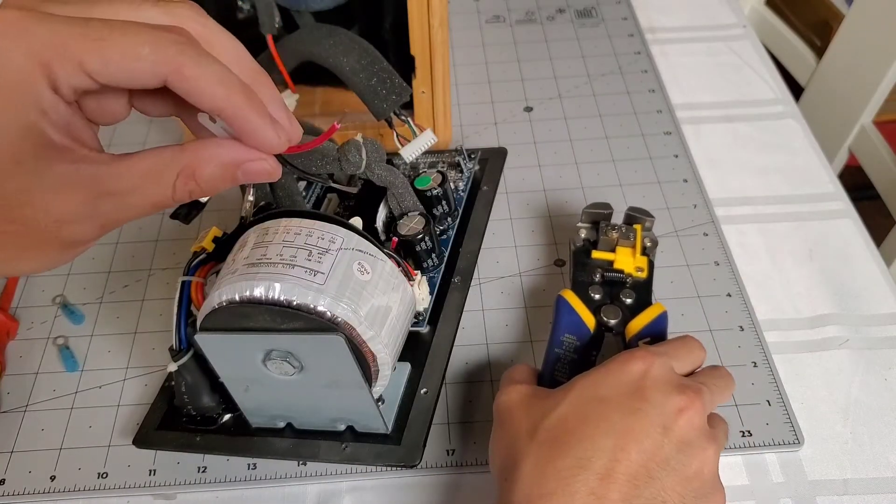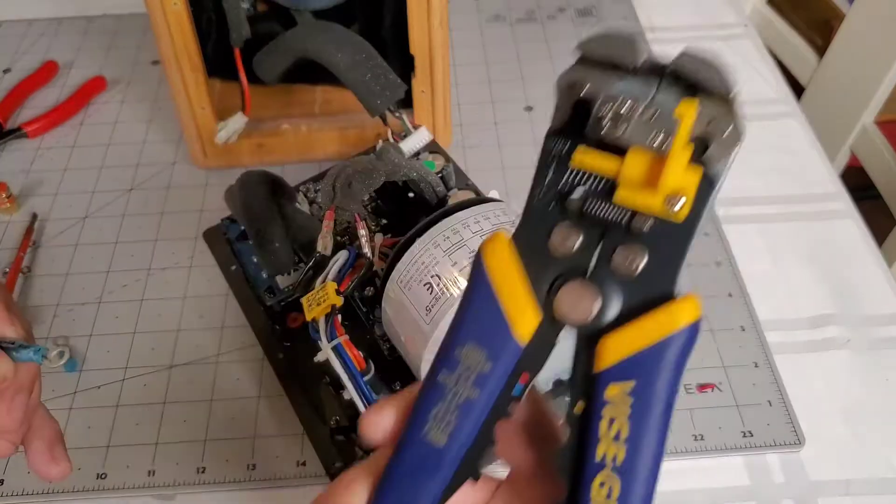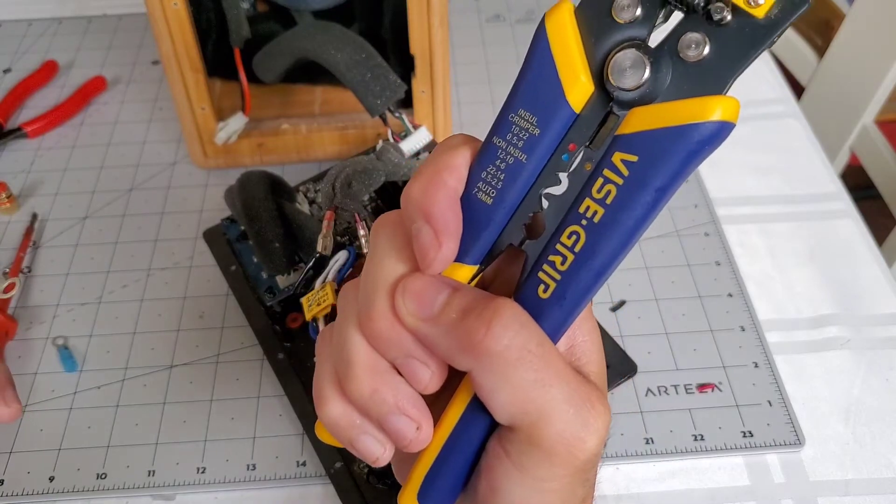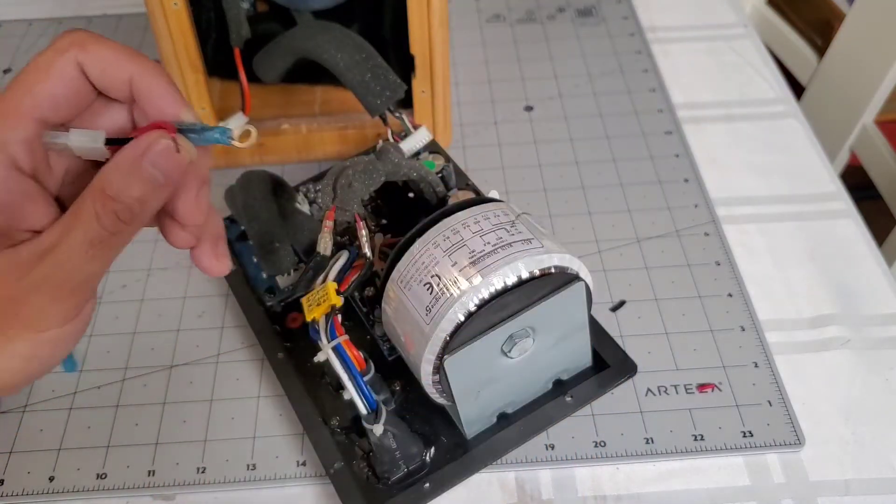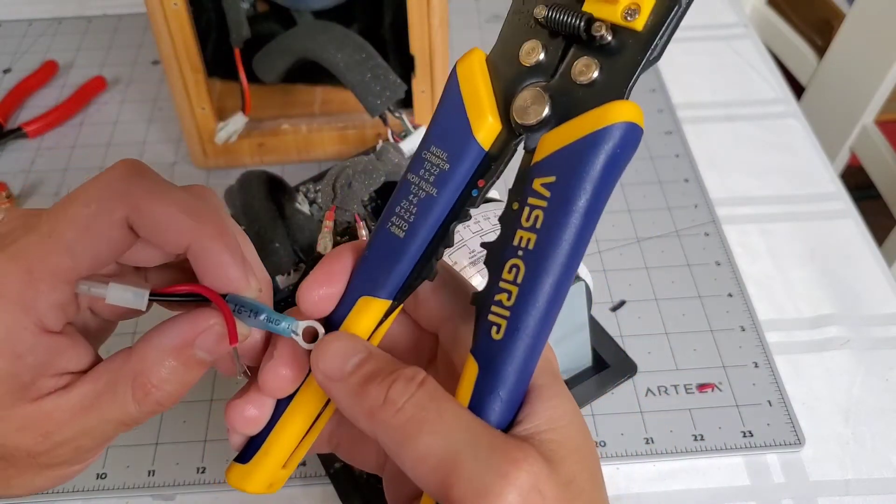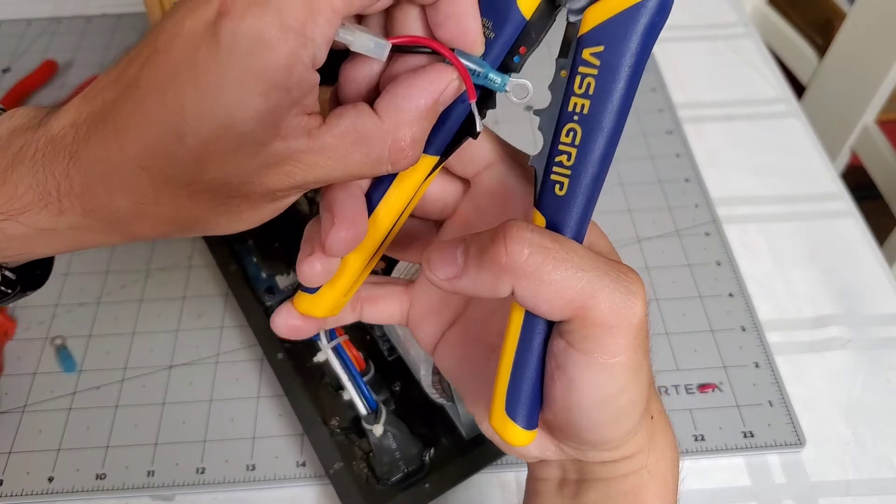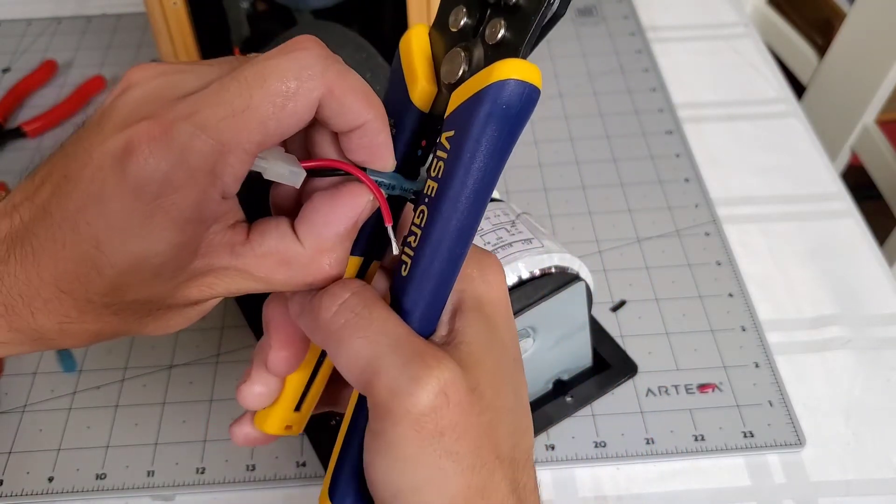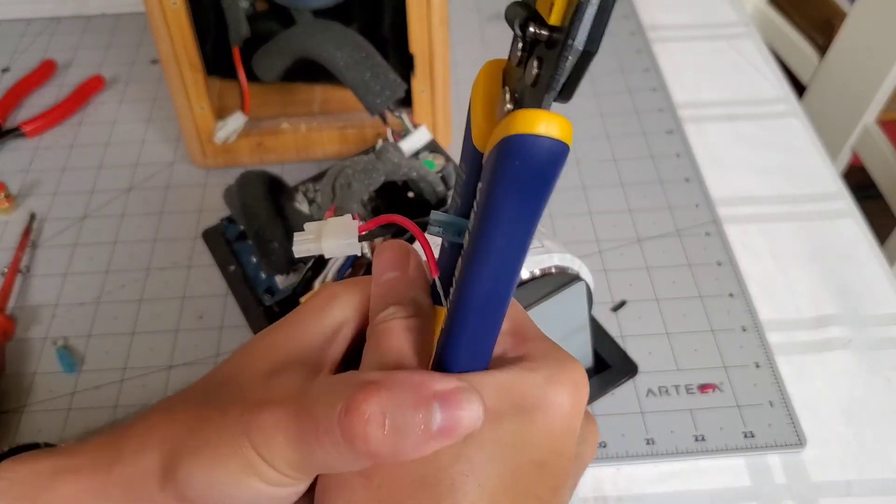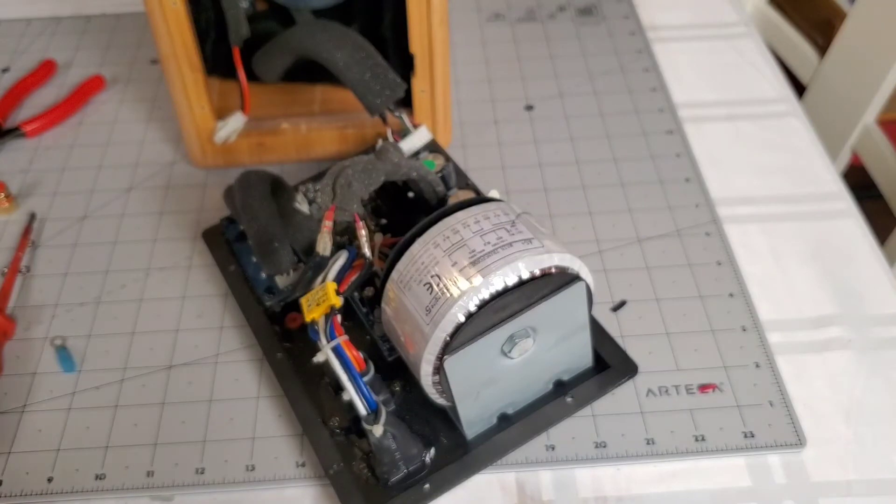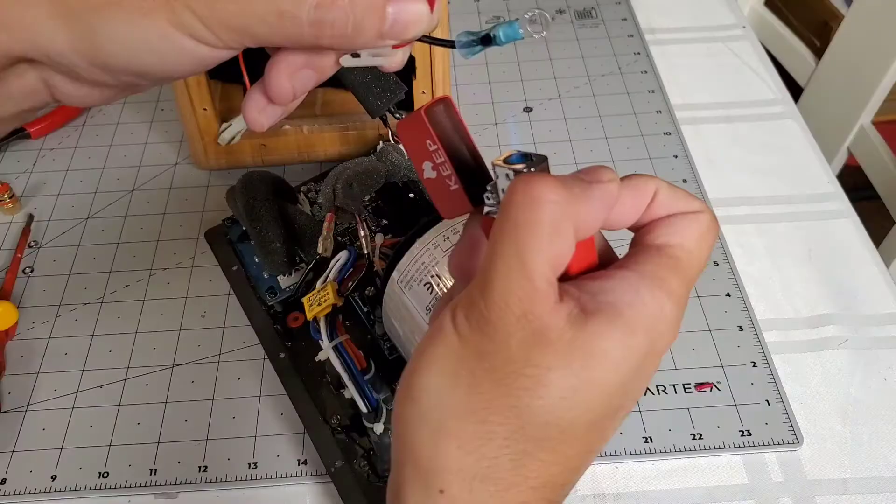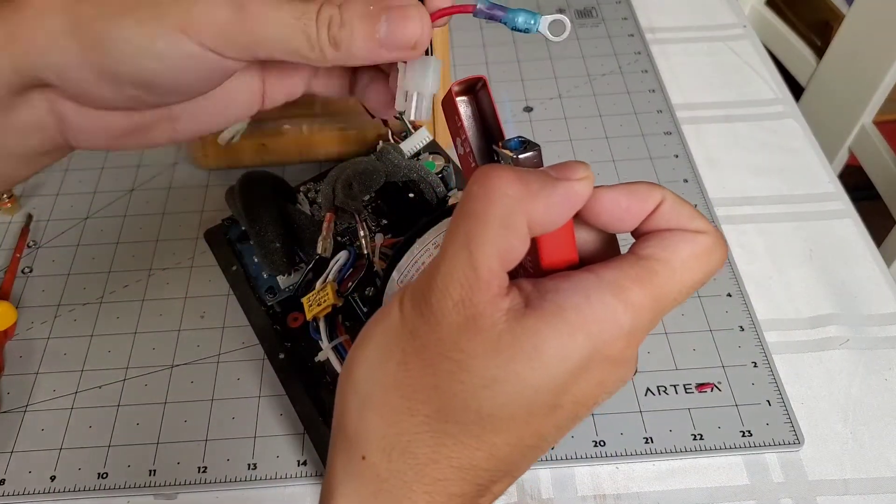At this point, you can pretty much screw on this wire with the nuts, but I'm going to do it right by putting in a couple of crimp connectors.